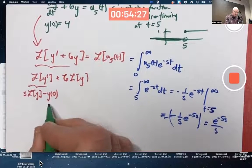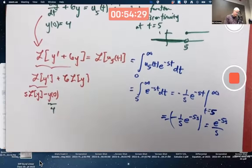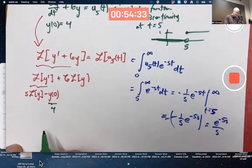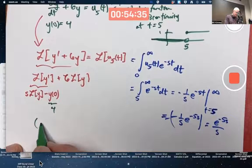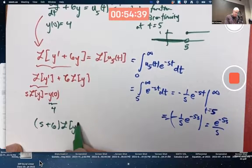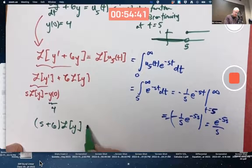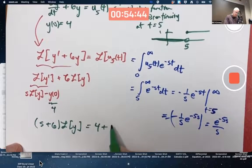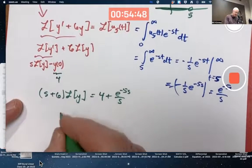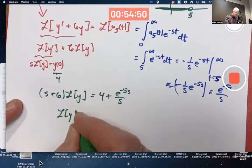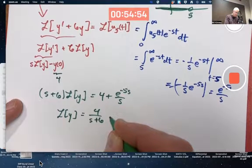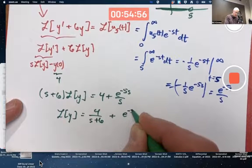Replace y of 0 with 4, solve for L of y. Let's see. On the left, L of y is multiplied by s and 6. I can bring the minus 4 to the right as a plus 4. Divide both sides by s plus 6.